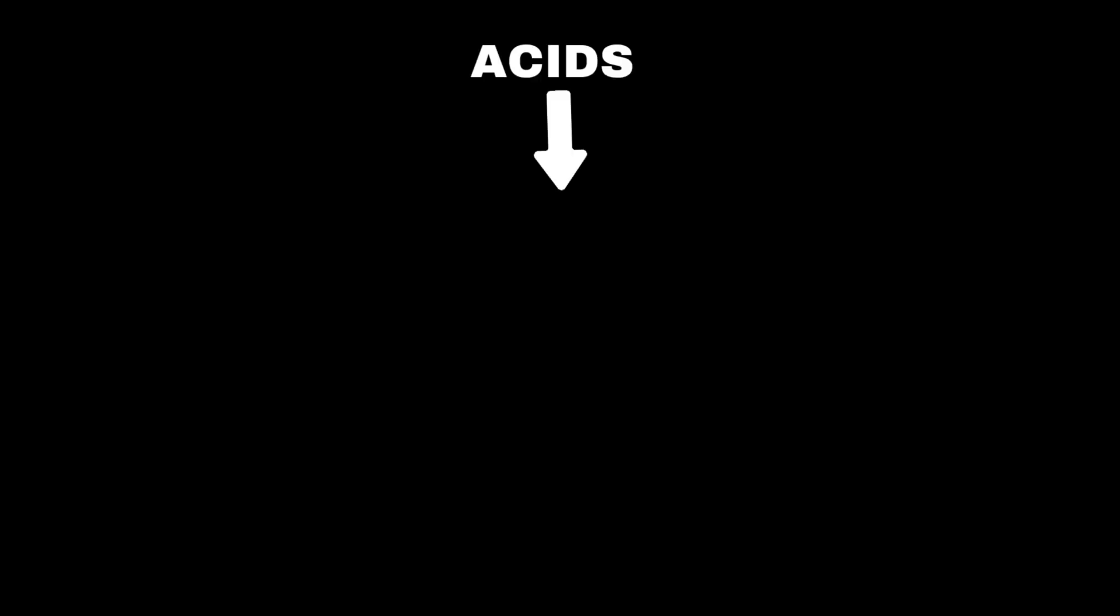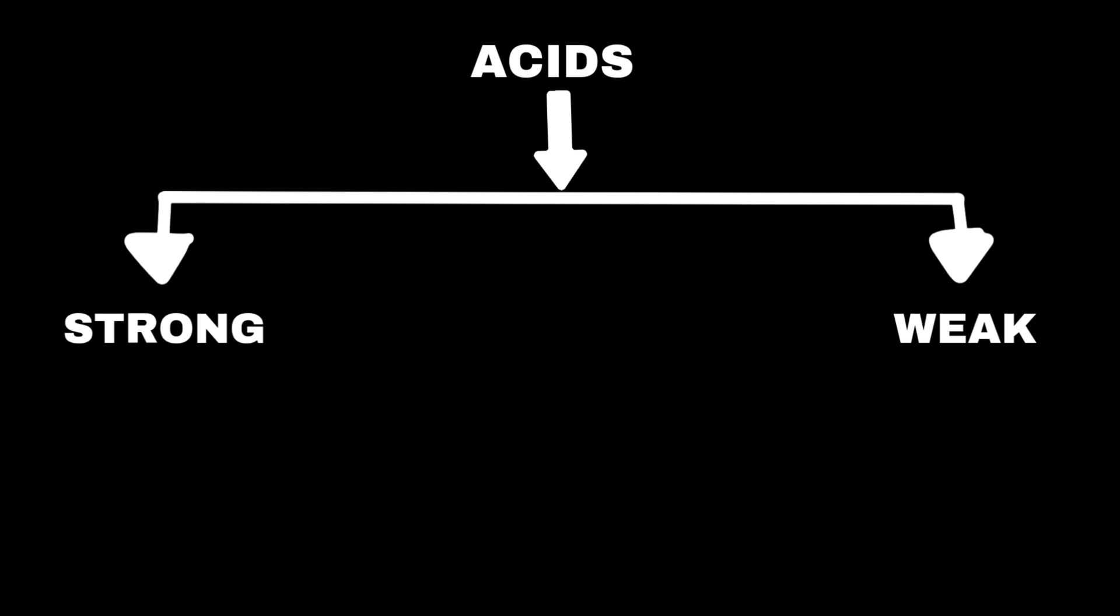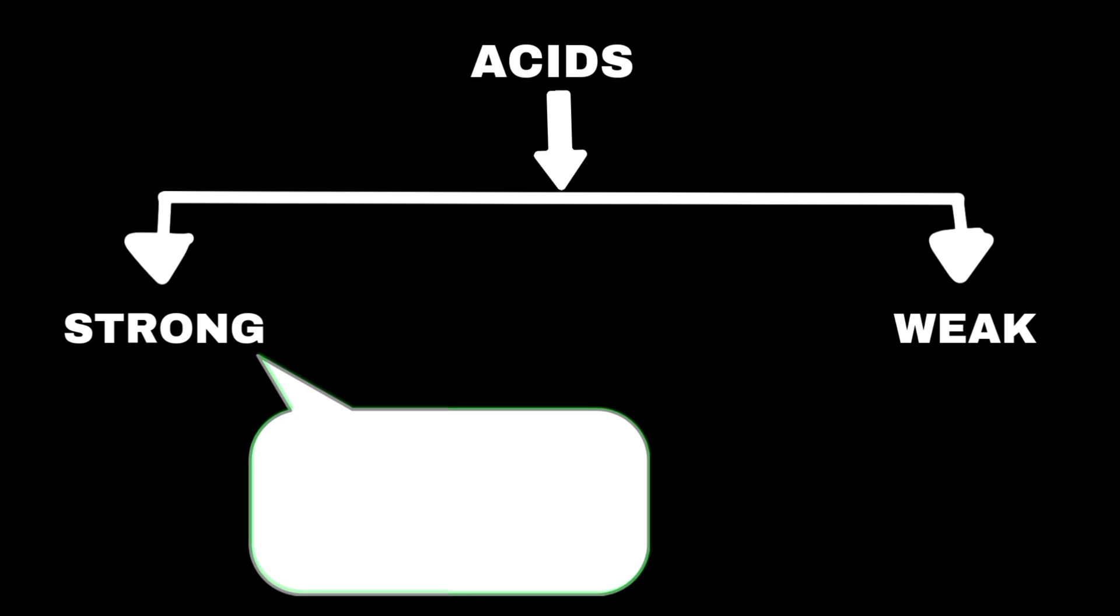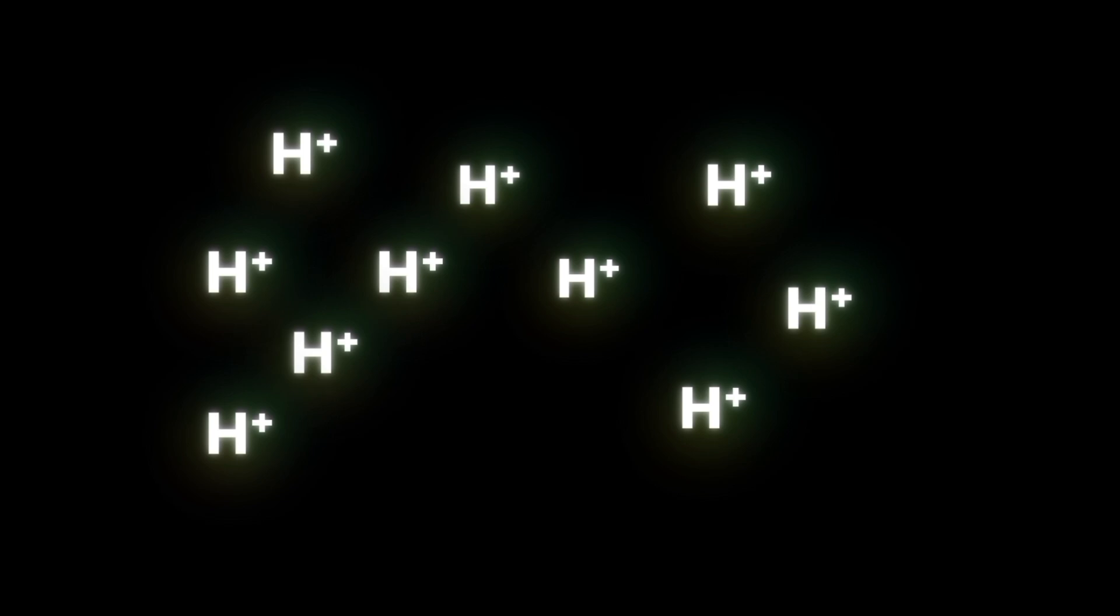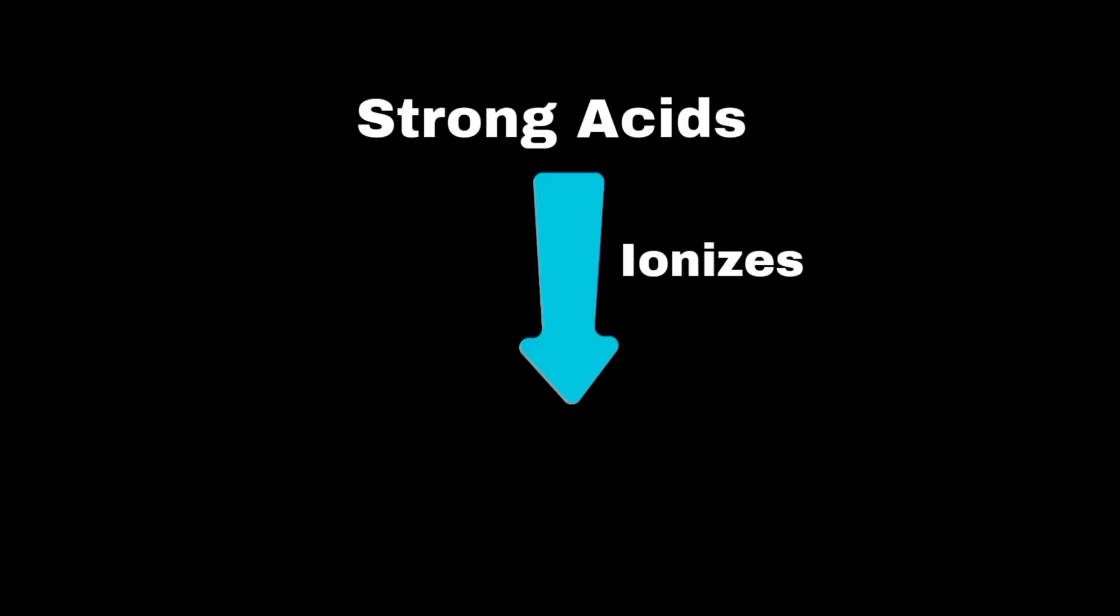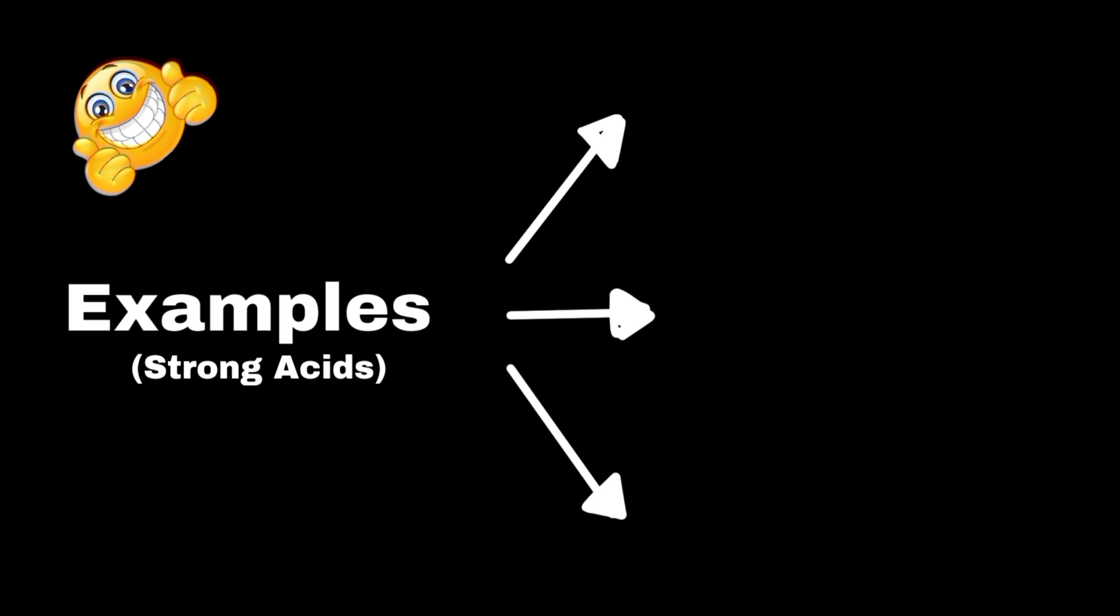Acids are further classified as strong or weak acids. A strong acid is an acid that completely dissociates into its ions in water, releasing all of its hydrogen ions. This means it ionizes 100%. Some common examples of strong acids are hydrochloric acid, sulfuric acid, and nitric acid.